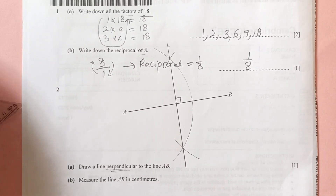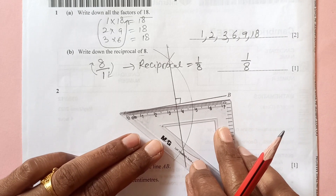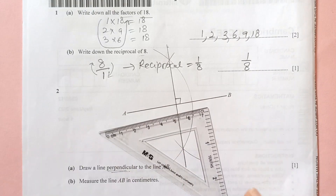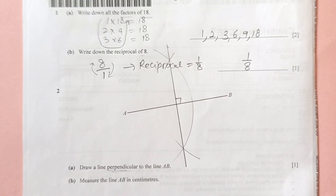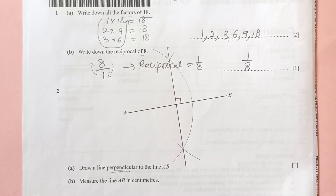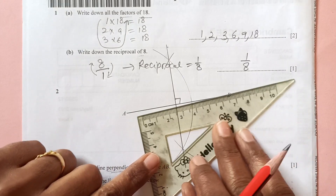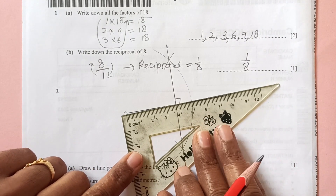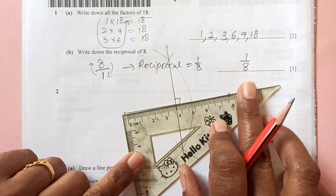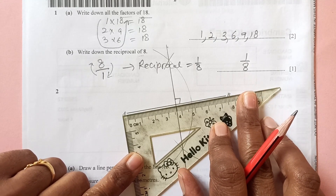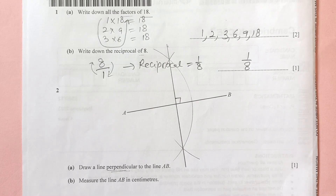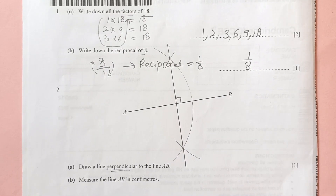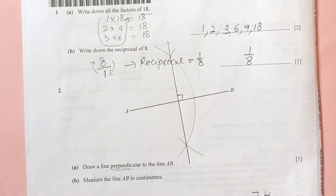Now measure the length AB from A to B. Measuring it gives 7.4 centimeters.